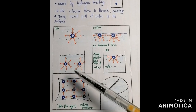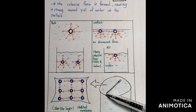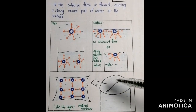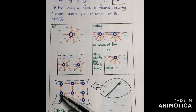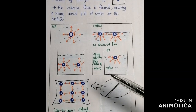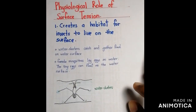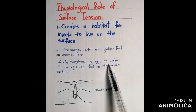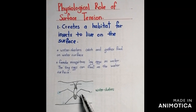Because of this stretched membrane-like surface, a needle placed on top of the water will float on it. However, if you apply a force and push the needle down, the stretched membrane breaks and the needle sinks. The physiological role of surface tension is that it creates a habitat for insects — water skaters can walk, catch, and gather food on the water surface, and female mosquitoes lay eggs on water, with the tiny eggs floating on the surface.